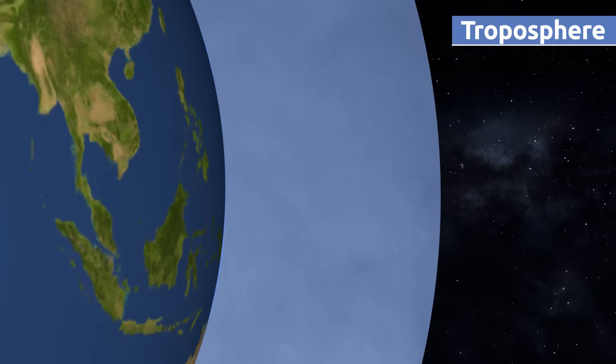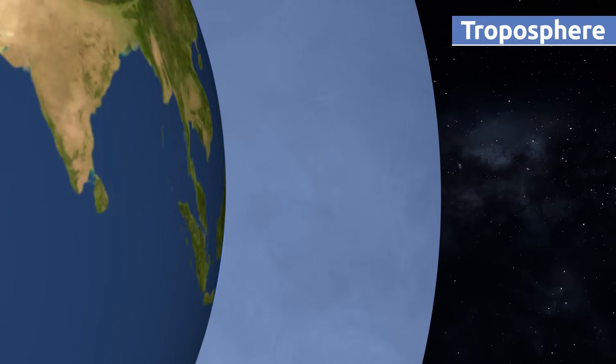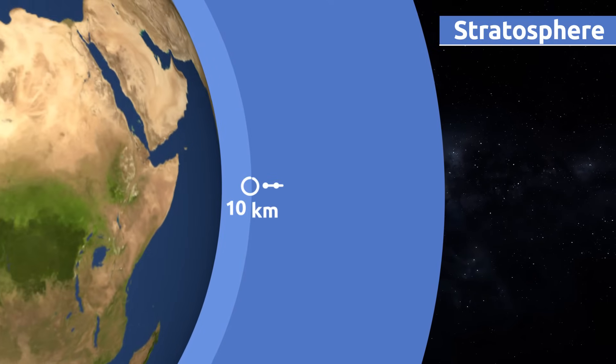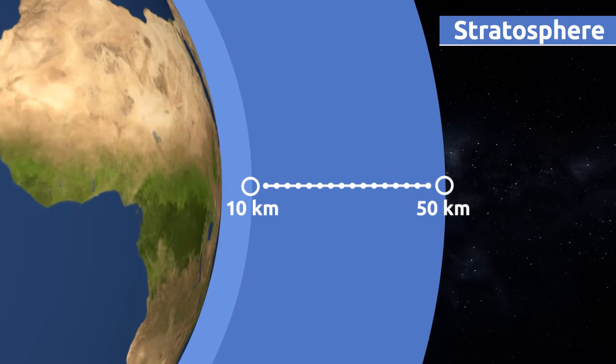Air that is much needed for life on the planet is found in the troposphere. That's why we should make sure not to contaminate it. The stratosphere extends to an altitude of 10 to 50 kilometers above sea level.